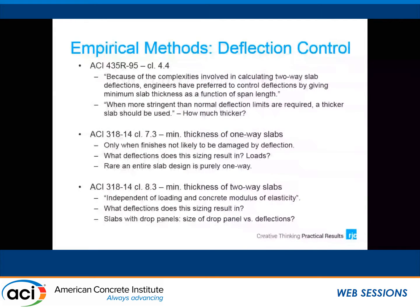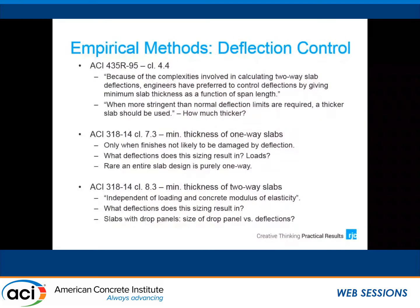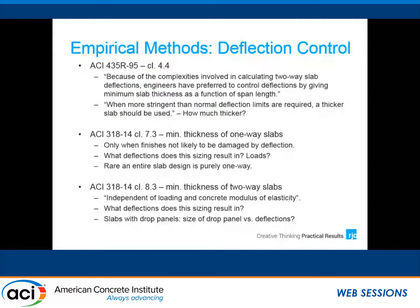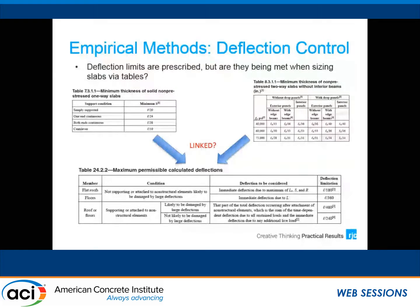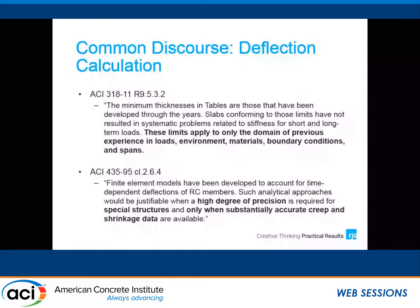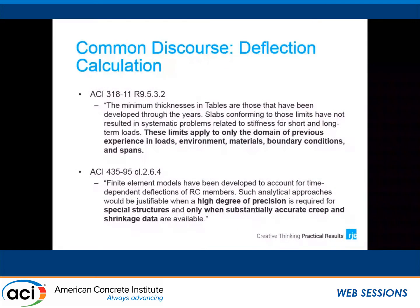Just a bit of background on empirical methods — I'm sure many of you are familiar with sizing slabs to control deflections traditionally. ACI 435 and 318 both acknowledge the use of span-to-depth ratios for slabs. When you dig into these, you see they're really independent of loading and material properties. The common discourse in slab deflection calculation is that the traditional tables are based on traditional slab systems with normal loads and normal materials, but we don't really know what those normal conditions are, especially as we try to build larger-span structures with thinner slabs.